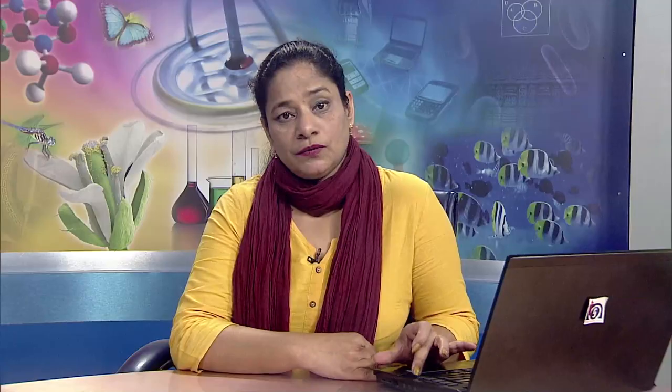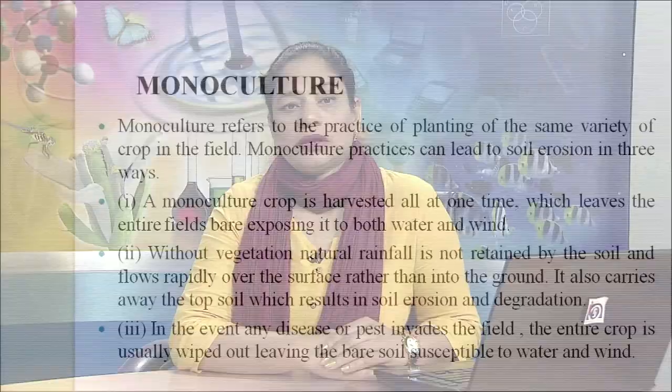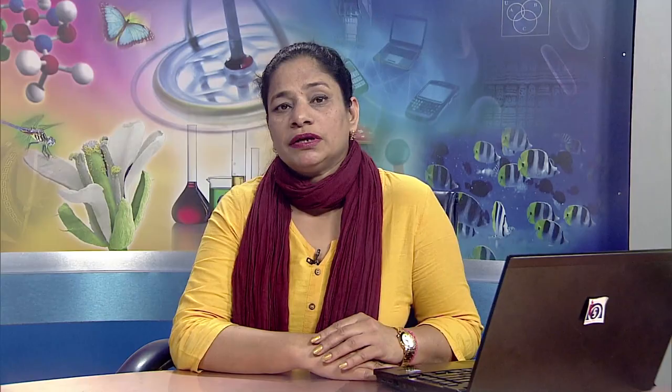Monoculture refers to the practice of planting the same variety of crops in a field. It can lead to soil erosion in three ways: a monoculture crop is harvested all at one time, leaving the entire field bare and exposed to both water and wind; without vegetation, rainfall is not retained by the soil and flows rapidly over the surface rather than into the ground, carrying away topsoil; and if any disease or pest invades the field, the entire crop is wiped out, leaving bare soil susceptible to water and wind. Overgrazing means too many animals are allowed to feed on a piece of grassland. Trampling and grazing by cattle destroy the vegetation of the area, making the land highly susceptible to both water and wind erosion.